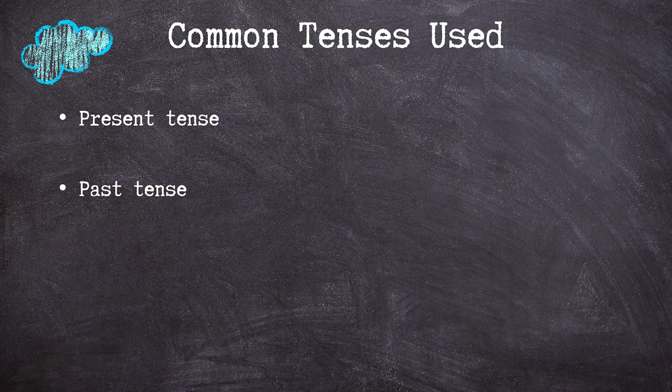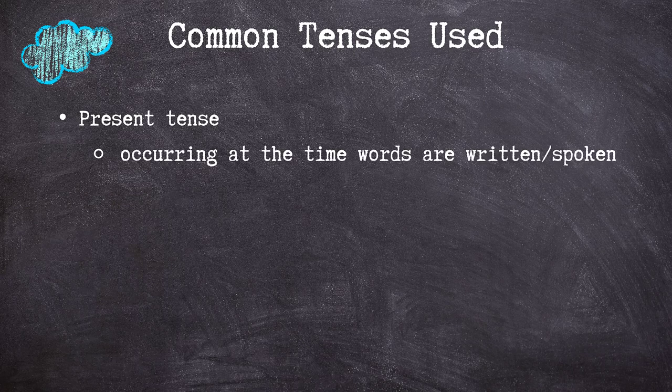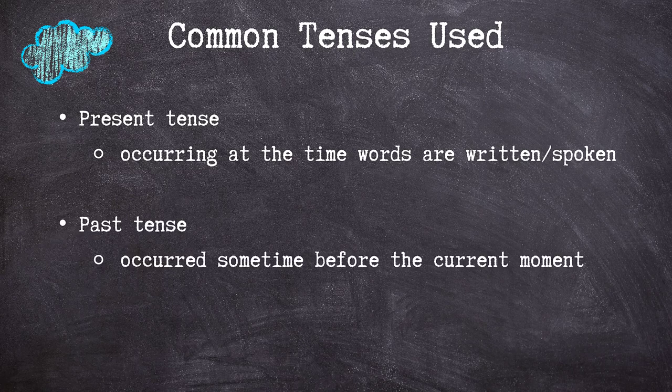Now that we've talked about a few general categories of verbs, let's talk about the two most common tenses you'll encounter and use in most academic writing: the present tense and the past tense. Verbs in the present tense talk about action or states of being occurring at the time the words are being written or spoken. Past tense verbs discuss events that occurred at some point before the current moment the words are being written or spoken.